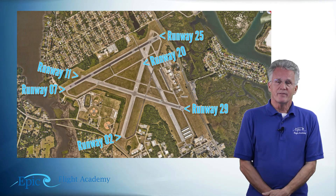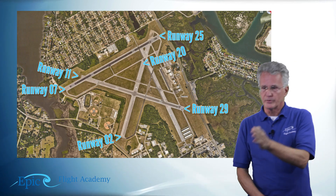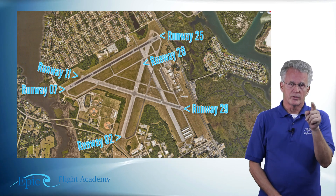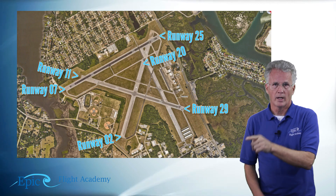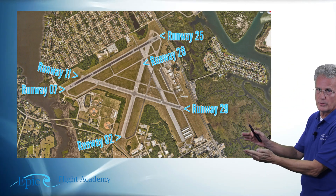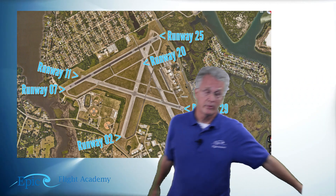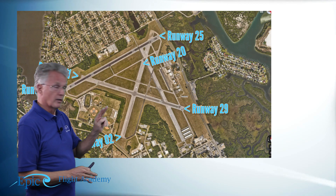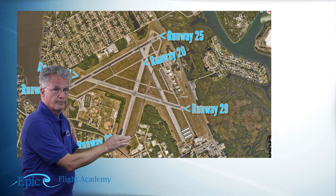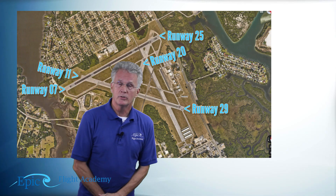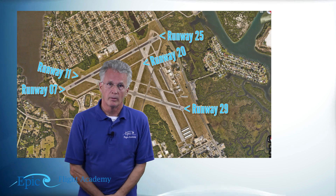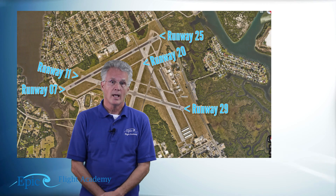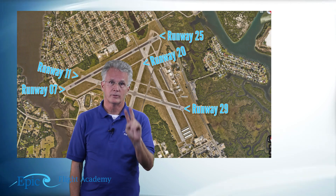So 70 wouldn't be rounded off to 'seven zero' in three numbers — zero, seven, zero. This would be runway zero seven. In the other direction, it's 250, but rounded off to two numbers, it's two five. Each runway is numbered according to the nearest ten degrees magnetic and is rounded off to two numbers.